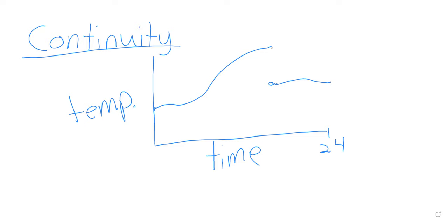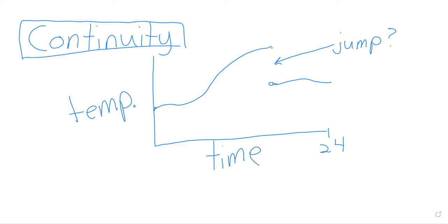Most of us have an intuition that a temperature function can't really look like this. Heating up takes time; cooling down also takes time. So if you have a sudden jump like this, that's not the quality that most real-world graphs ought to be exhibiting. And that's summarized by the statement that most real-world graphs are continuous.